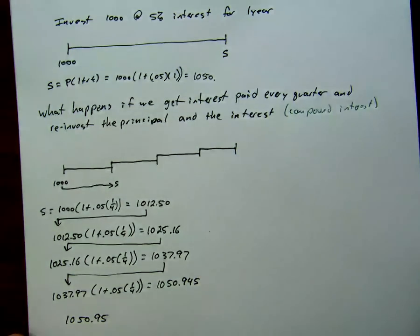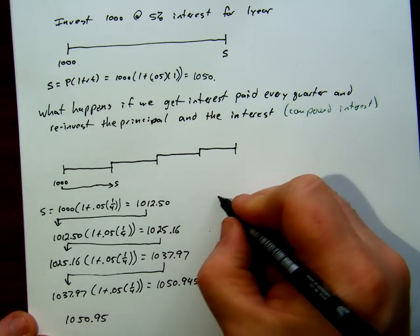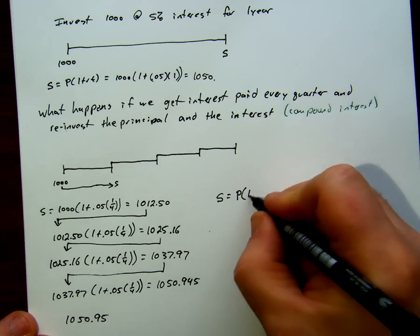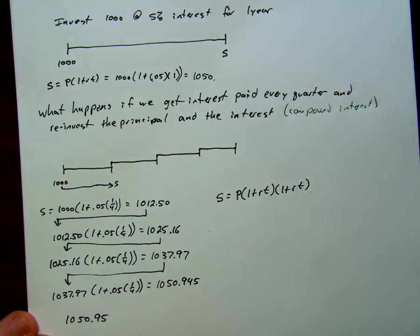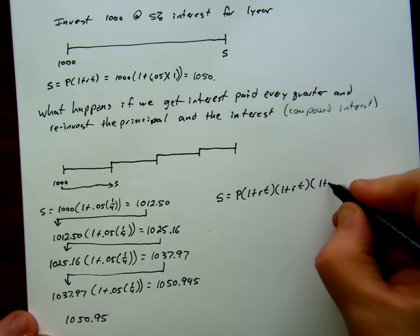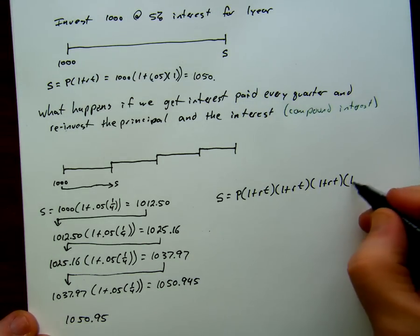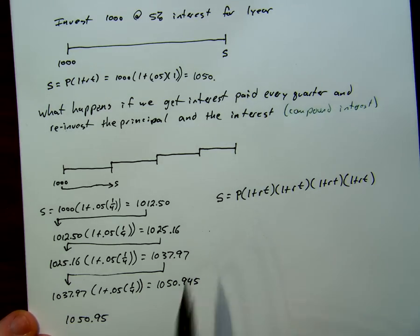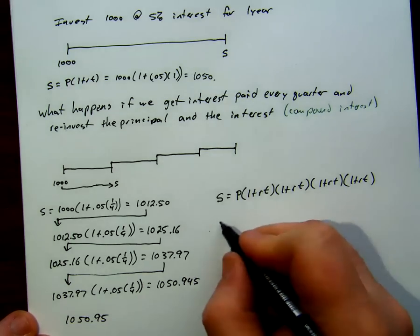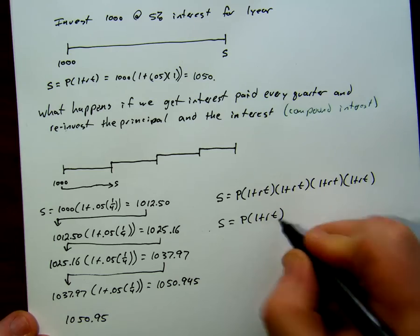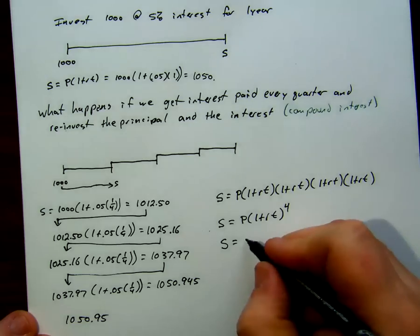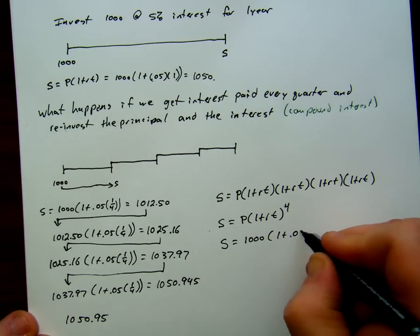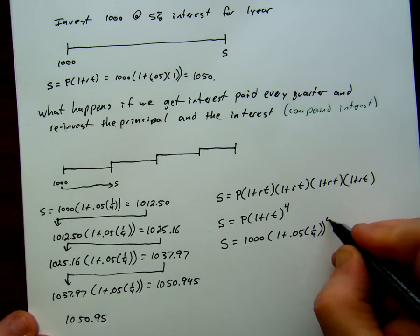What we've done is always take the value and multiply by another simple interest factor (1 + RT). As an equation: S = P × (1 + RT) × (1 + RT) × (1 + RT) × (1 + RT), which we can combine as S = P(1 + RT)^4. In our case, S = $1,000 × (1 + 0.05 × 1/4)^4.